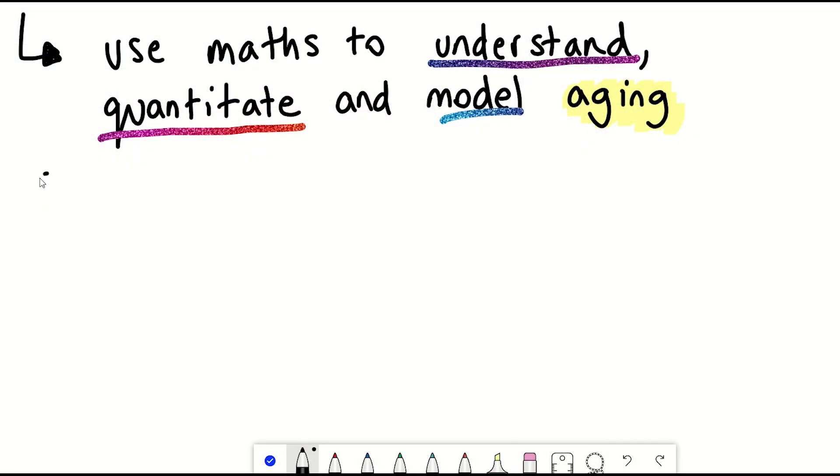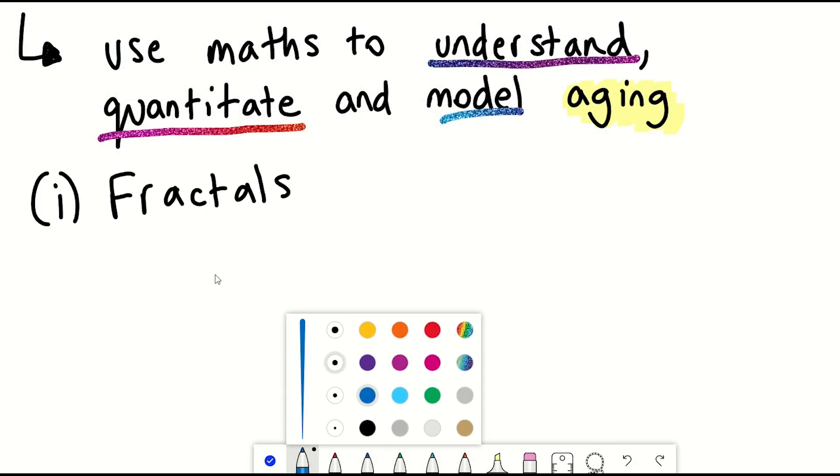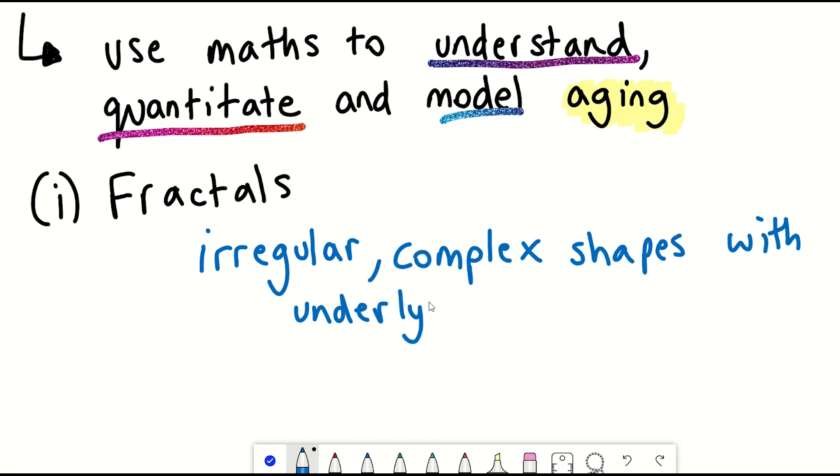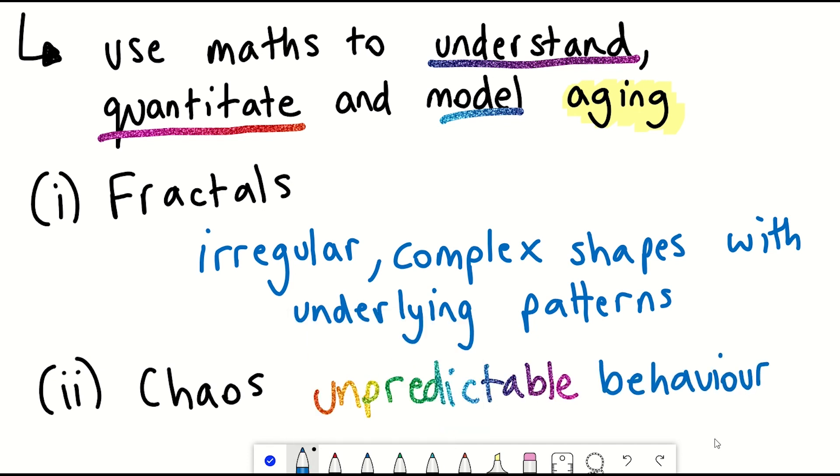But the two concepts are fractals, irregular complex shapes that have underlying patterns, and chaos, apparently unpredictable behaviour that can arise from internal feedback loops of non-linear systems, a feature that seems to be apparent in many biological networks.